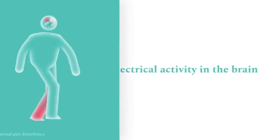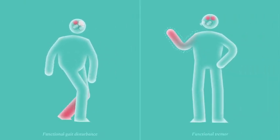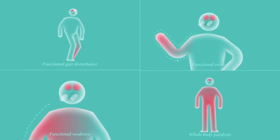Functional movement disorders can cause difficulty with walking, tremors, so uncontrollable shaking or weakness, and sometimes even whole body paralysis.